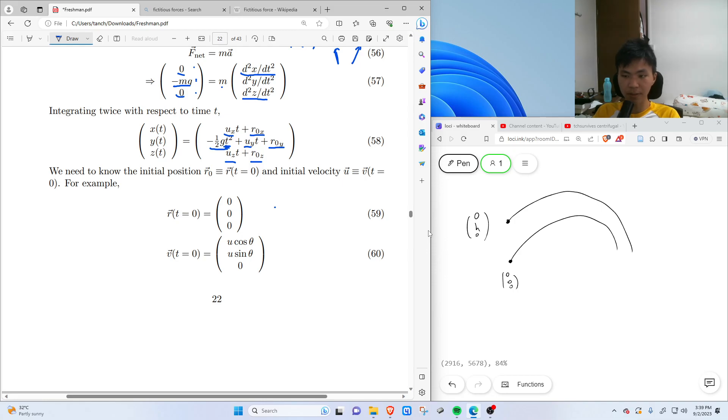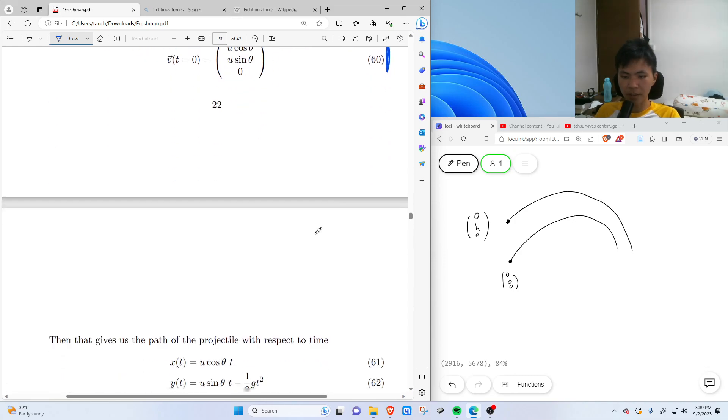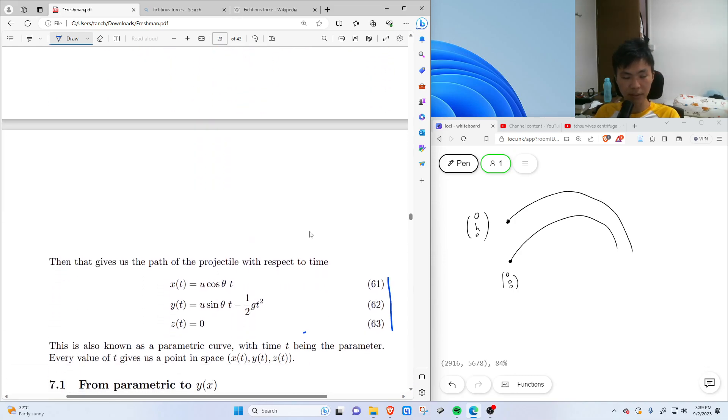Substituting the initial conditions, 59 and 60, 60 is the velocity, into 58, we get the usual equations of motion, 61 to 63.